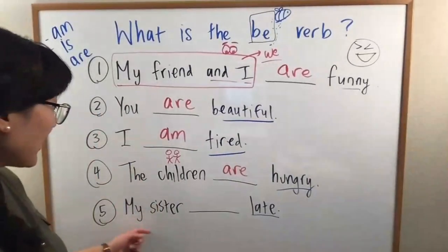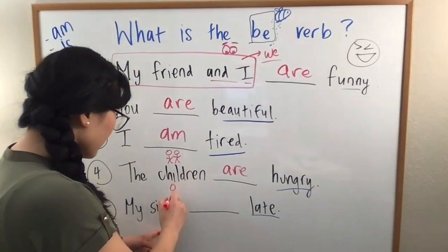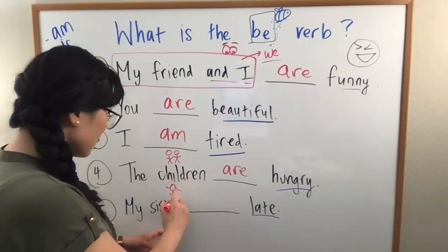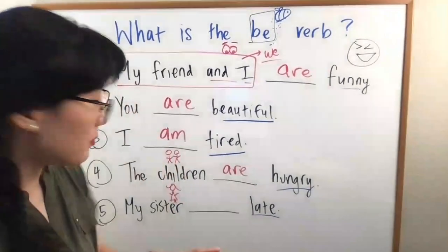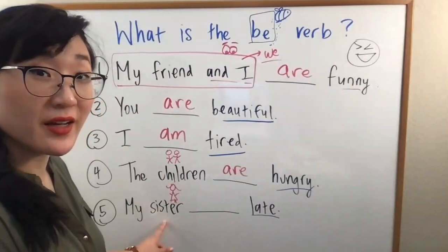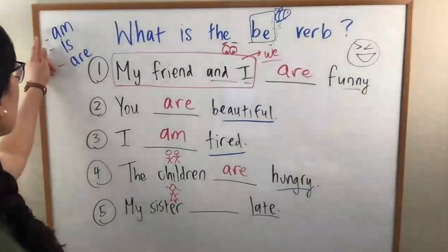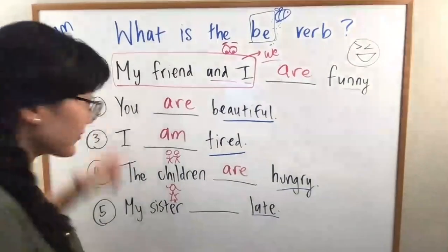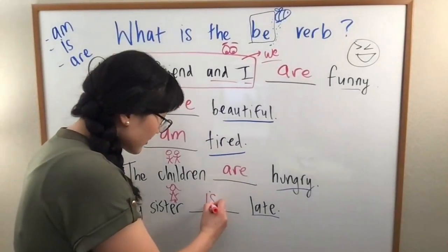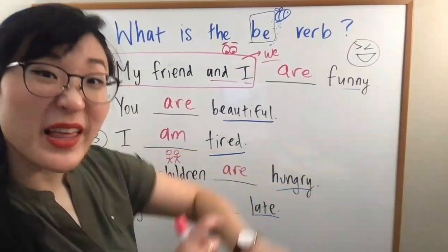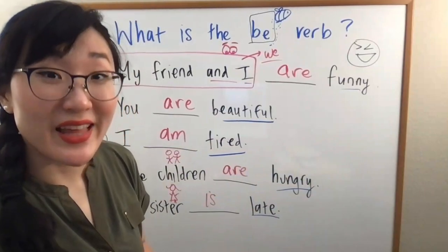Final one. My sister. One person. My sister. She. She. Is. She is. Late. Late.